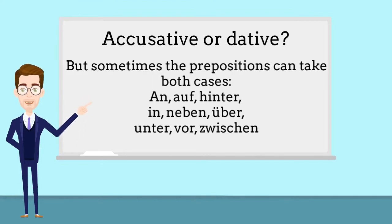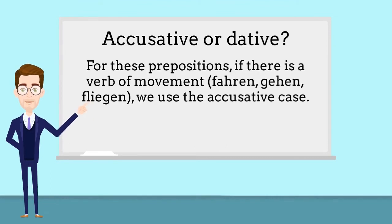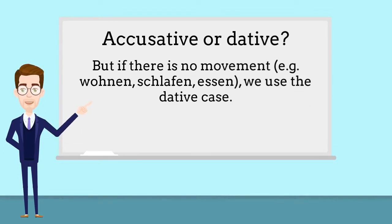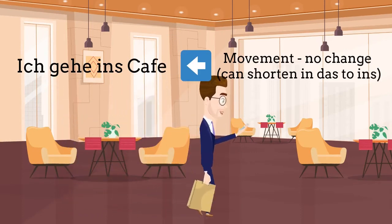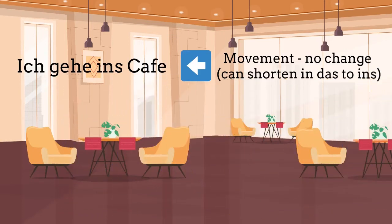An, auf, hinter, in, neben, über, unter, vor, zwischen — these could be either. If there's a verb of movement with these prepositions, we use the accusative case. But if there's no movement or we're expressing position, then we use the dative case. Ich gehe in das Kaffee — oder ins Kaffee — there's movement, so no change.